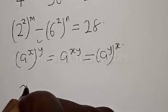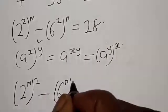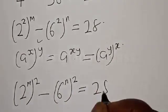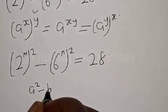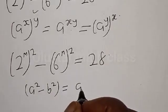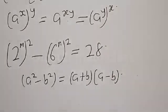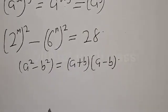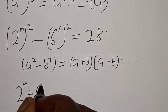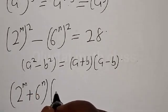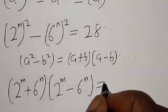We have 2 raised to power m, all squared, minus 6 raised to power n, squared, is equal to 28. Now if you look at this, this is a difference of two squares. Remember, a squared minus b squared is the same thing as (a + b) multiplied by (a − b). Here a is 2 raised to power m and b is 6 raised to power n. Therefore our equation becomes: (2 raised to power m plus 6 raised to power n) multiplied by (2 raised to power m minus 6 raised to power n) is equal to 28.